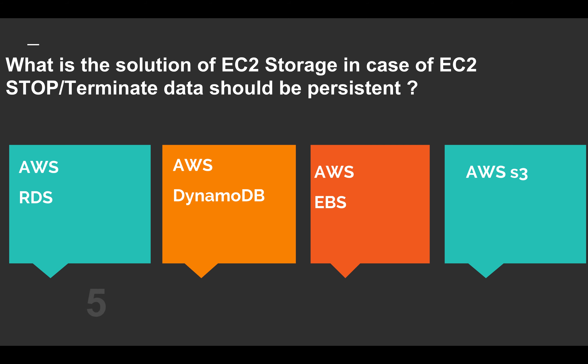This is a really easy question. The answer is Elastic Block Storage (EBS). You can use Elastic Block Storage as persistent storage, and in case of EC2 stop or terminate, the EBS will provide persistence.